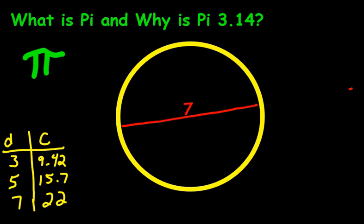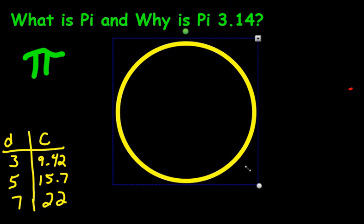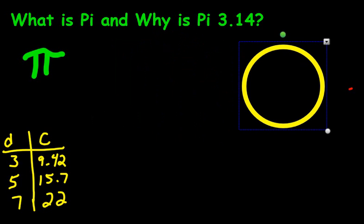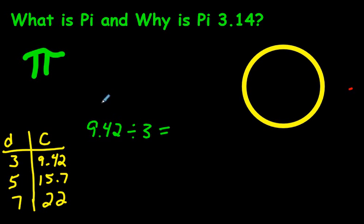We're just kind of rounding that one off. So here are some numbers that this person discovered, and all of that was fine and dandy, and there was not much else to think about, except then there was suddenly a pattern that was being noticed. This person said, hey, I see a pattern here. And I don't know if you can see the pattern already, but if you look at all these numbers, if you take 9.42 and if you divide that by 3, so if you take the circumference and divide it by the diameter, what do you get?